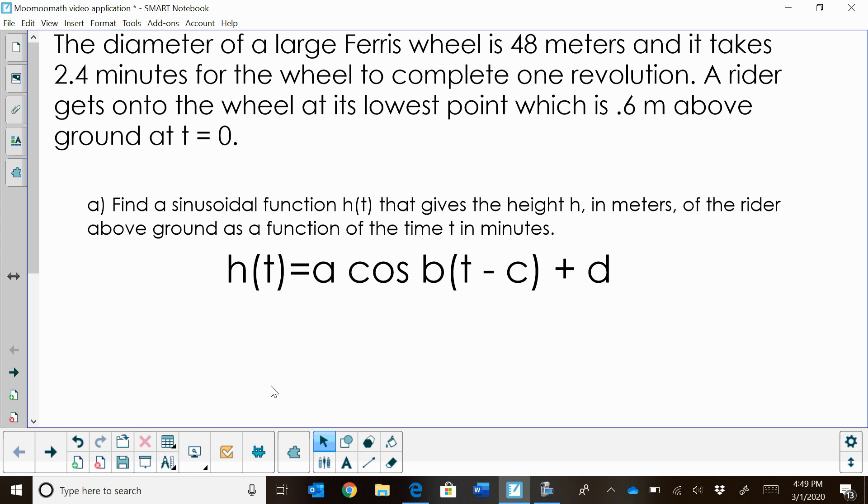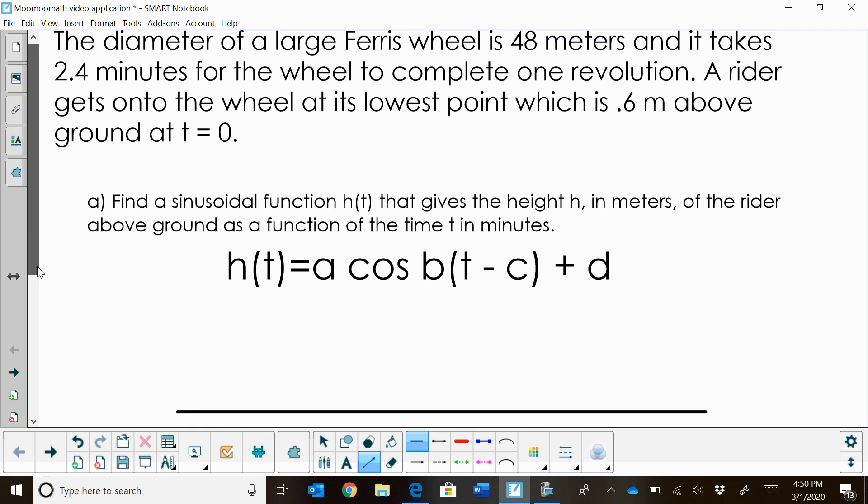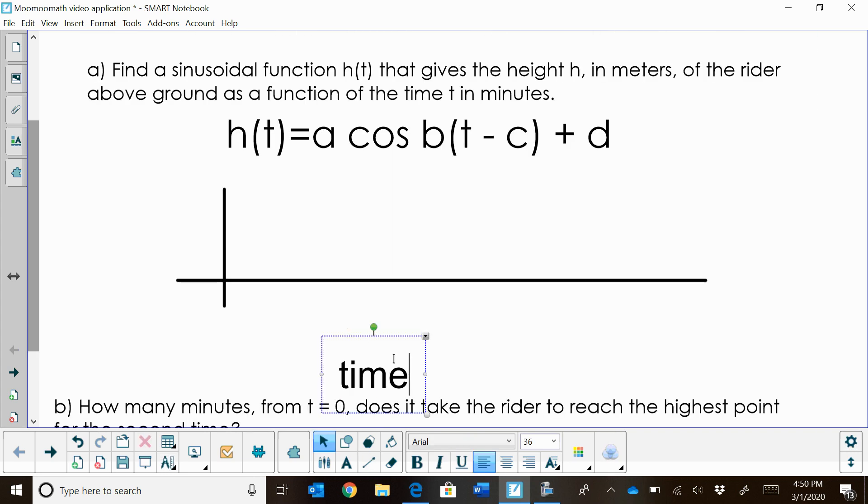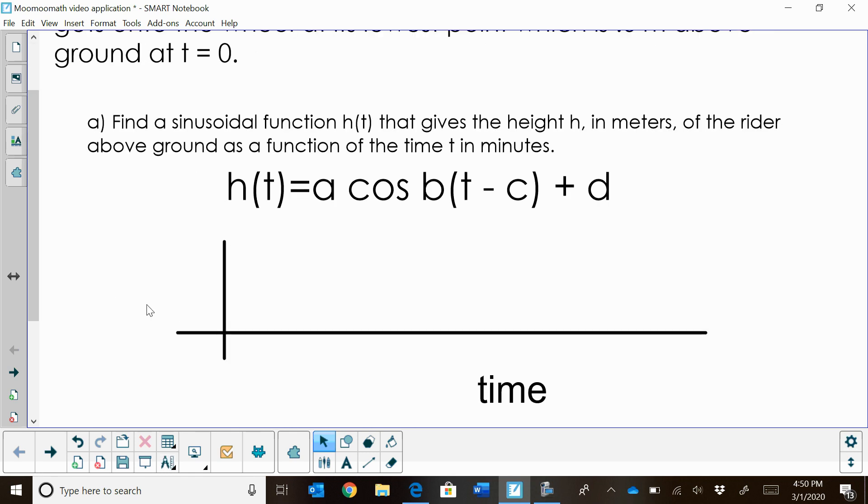We're going to find the sinusoidal function for that graph. Let's start by sketching a picture. I'm going to give myself an x-axis, which represents the ground level, at time zero, and I'm going to also have a y-axis. The y is going to represent the height. The x-axis is going to represent time in minutes, and our height is the y-axis in meters.